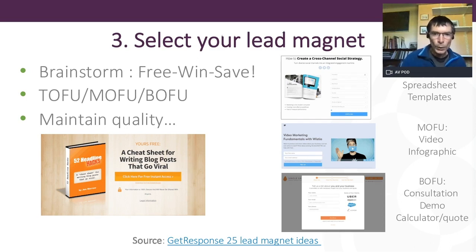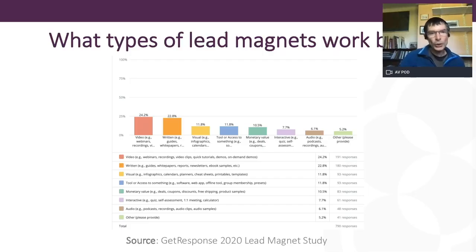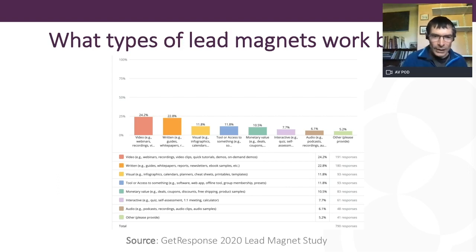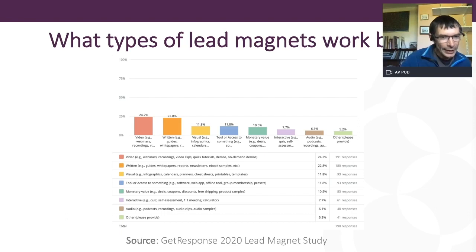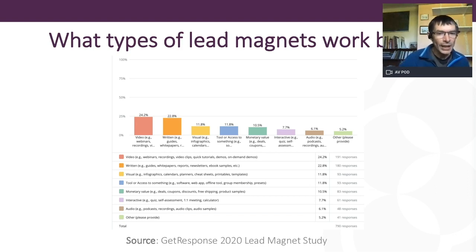These are all gated — you would have to give your details to get the lead magnet. You can also have ungated content to encourage engagement. But with the classic lead magnet, you do have to exchange your email address to get access. This is some current work Michael and the team at GetResponse have been doing — looking at what content types work best according to the GetResponse audience. Video and webinars are the number one option, which is perhaps a bit surprising since white papers and guides often rank higher for B2B audiences. So perhaps there's a lot of B2C where video often works best.